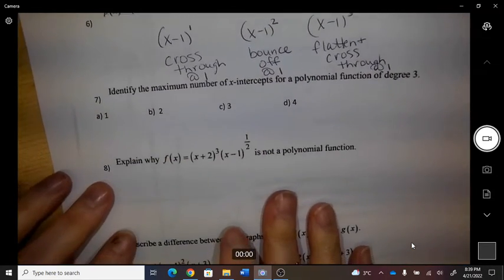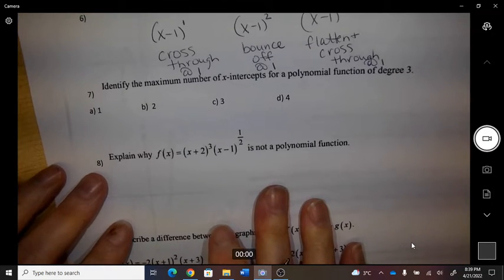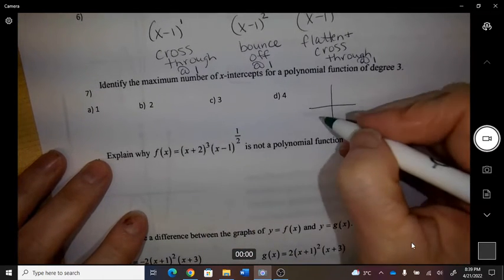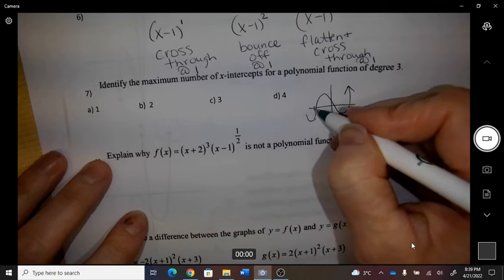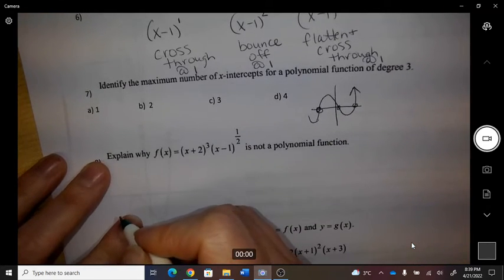Identify the maximum number of x-intercepts with a polynomial of third degree. So the most you could have is 3.